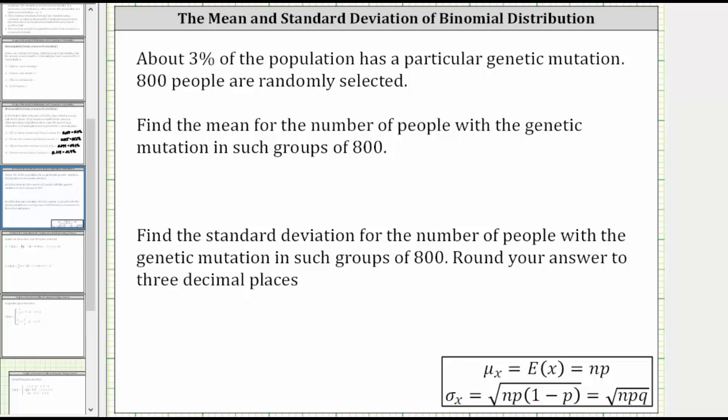In this lesson, we will find the mean and standard deviation of a binomial distribution. About 3% of the population has a particular genetic mutation. 800 people are randomly selected.